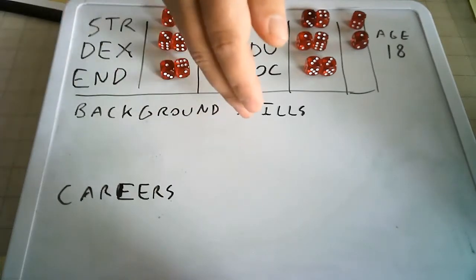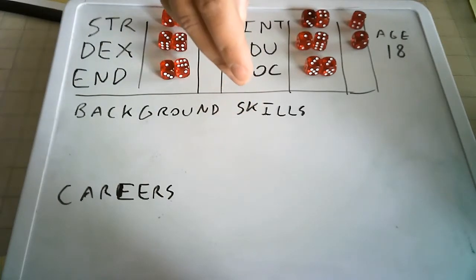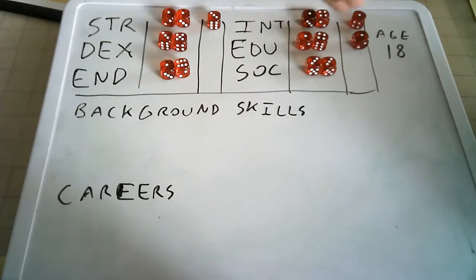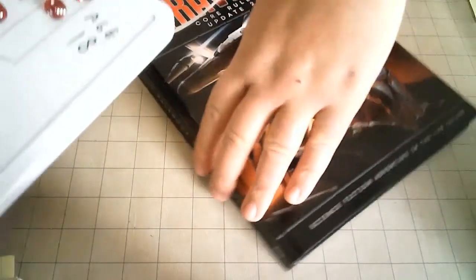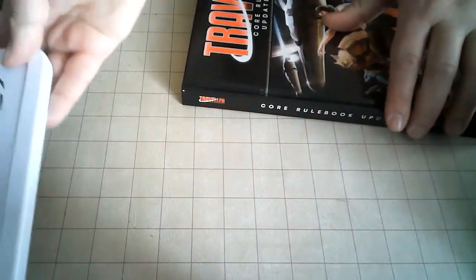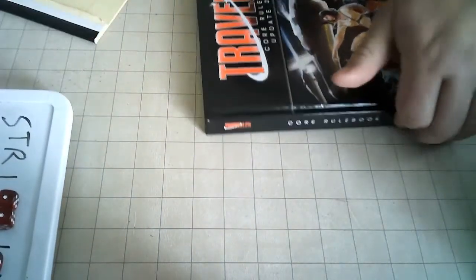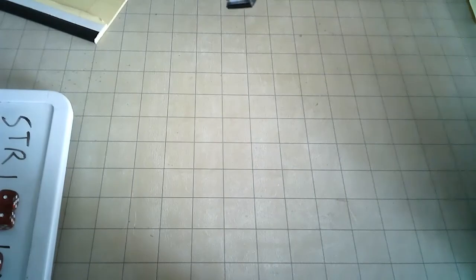You'll have background skills equal to three plus your educational modifier. So, two. And then the educational skills themselves are going to be listed in the book. So, what do I want for this particular character? I'll just need to learn a little bit more about the world itself.